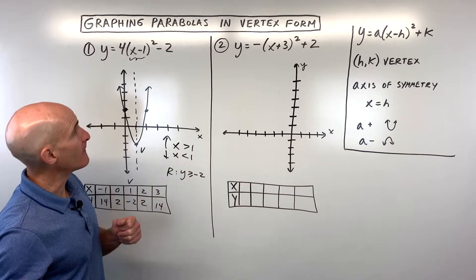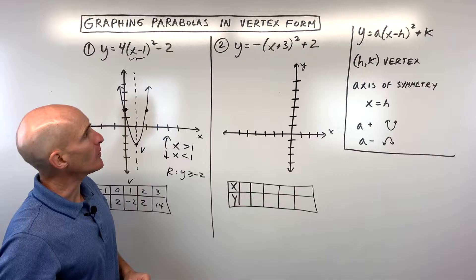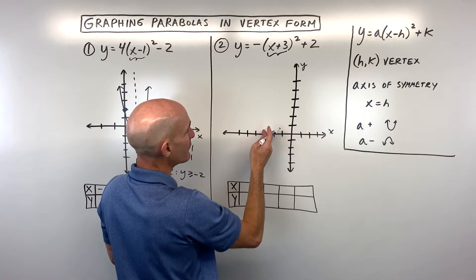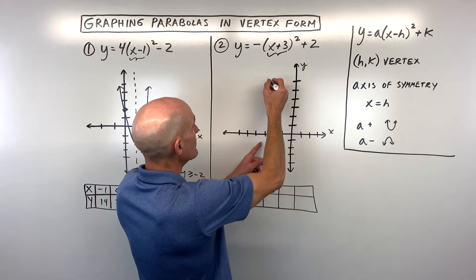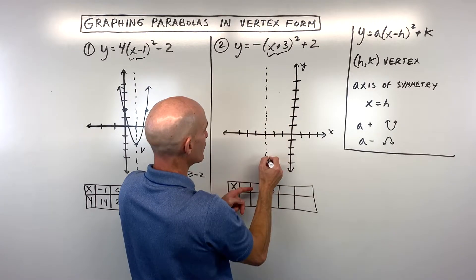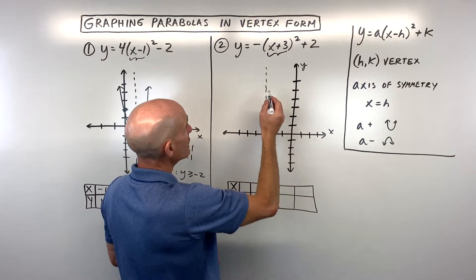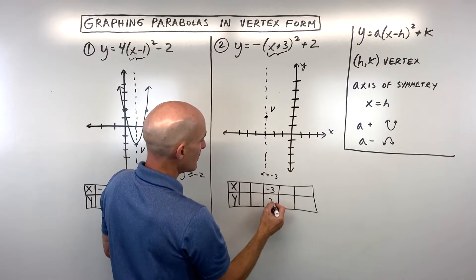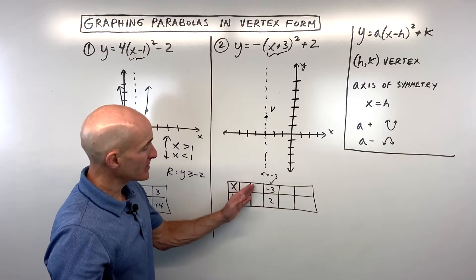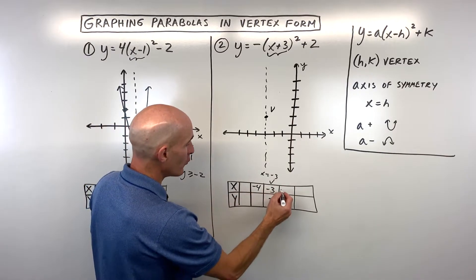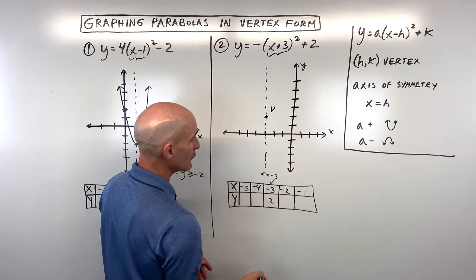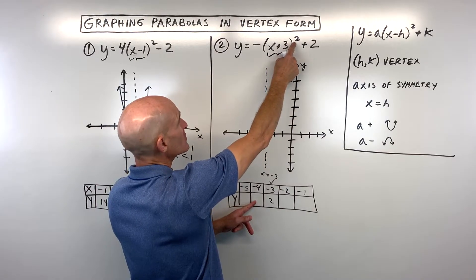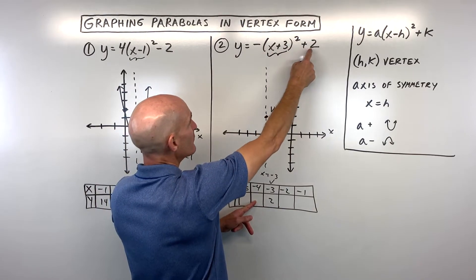So let's take a look at number 2. Where is the vertex? Remember, the number grouped with the x has the opposite effect. So the plus 3 is actually going to shift this graph left 3, and that's where our axis of symmetry is — x equals negative 3. The 2 is going to shift the graph up 2. So left 3, up 2 — this is our vertex. Plugging in negative 4: negative 4 plus 3 is negative 1. Negative 1 squared is 1. Times negative 1 is negative 1. Plus 2 is 1.